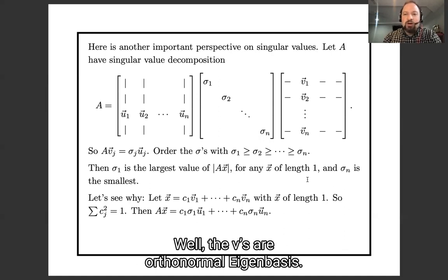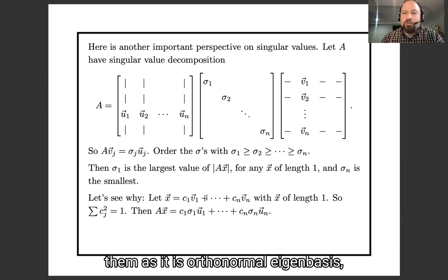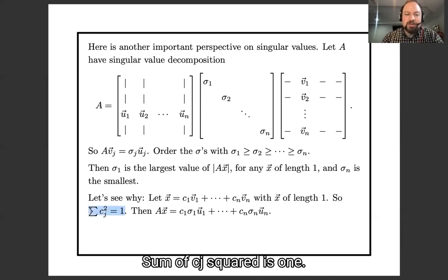The largest singular value will be the largest value of ||Ax|| for any x of length one, and σn will be the smallest. And let's see why. Well, the v's are an orthonormal eigenbasis, so write x in terms of them. As it's an orthonormal eigenbasis, we have the usual geometric formula, the Pythagorean theorem. Sum of cj squared is one. So then Ax is c1σ1u1 plus blah blah plus cnσnun.